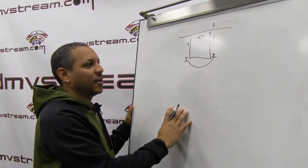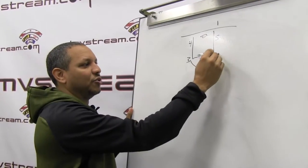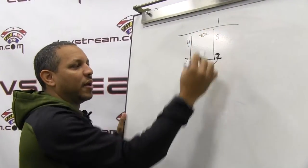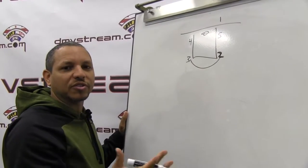This is a play that we call a box set. What we want to do is get our shooter on ball side with our big man here. So it's basically an old school screen for the screener.